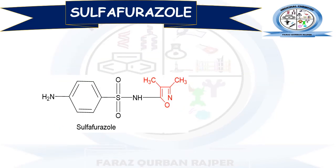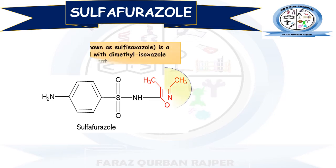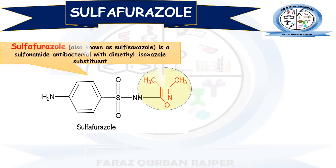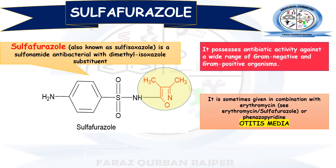The next derivative is Sulphafurazole. Sulphafurazole is an N1-substituted derivative of sulphanilamide formed from a dimethyl-isoxazole derivative. In its chemical structure, you may observe that there is an additional methyl group in comparison to the previous Sulphamethoxazole.